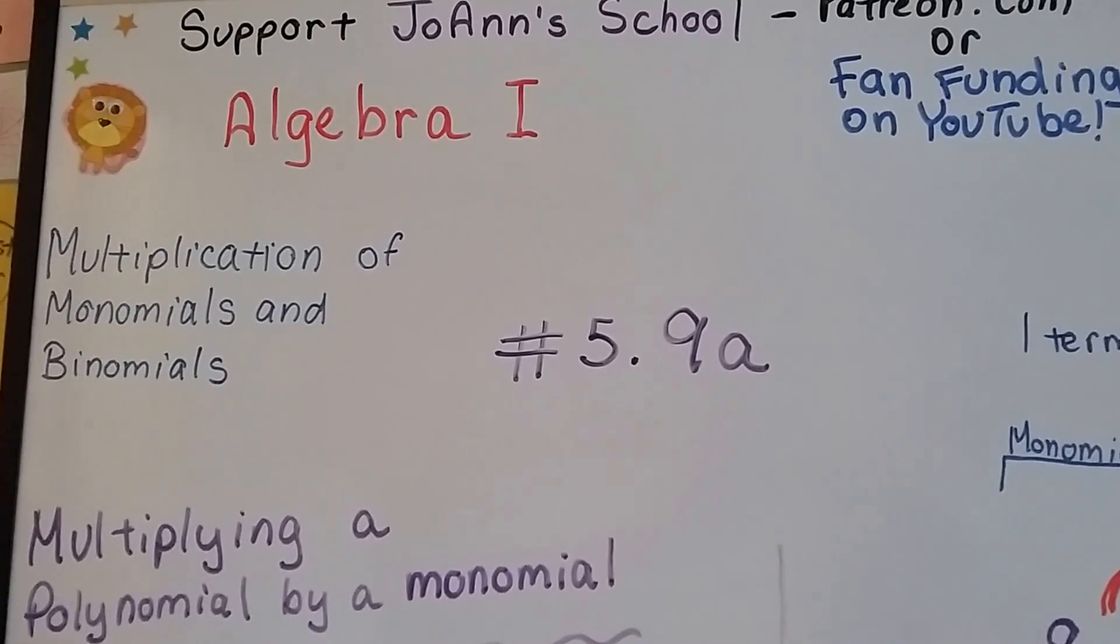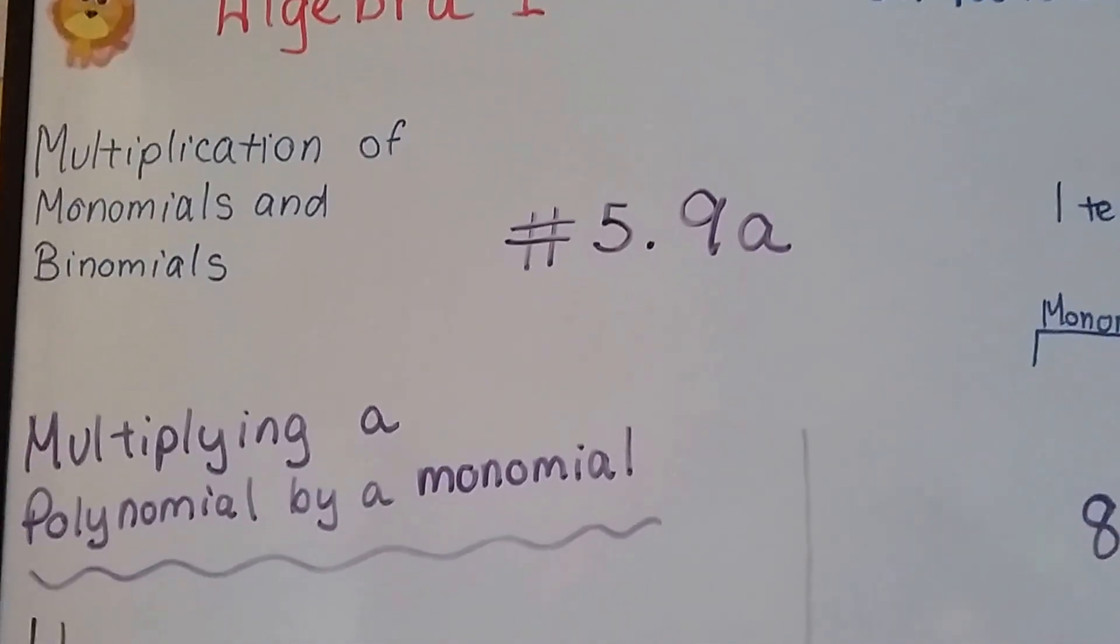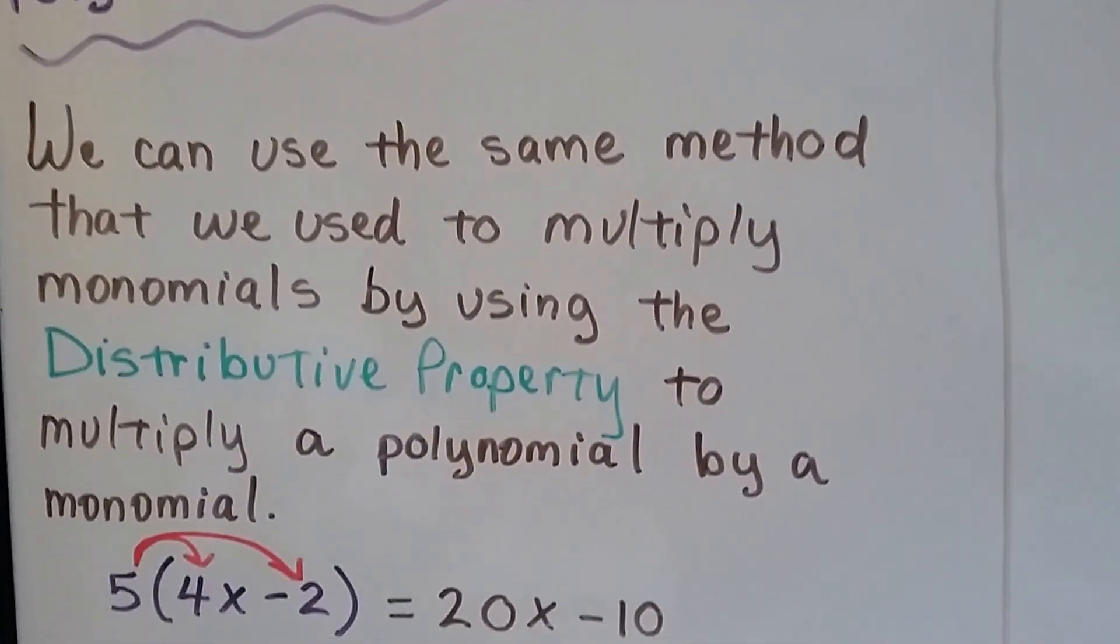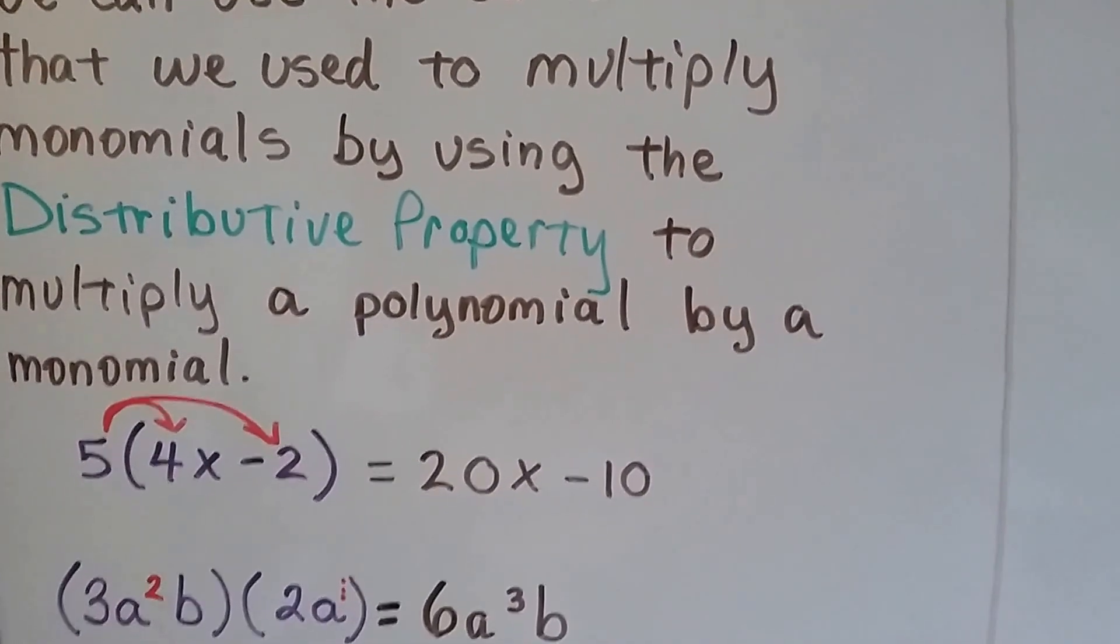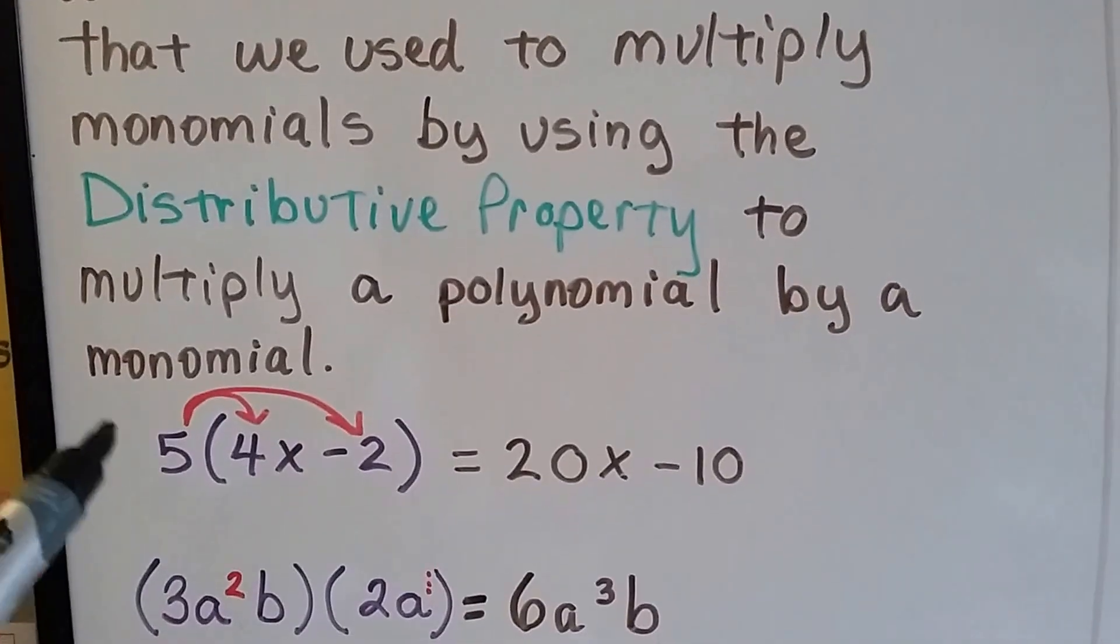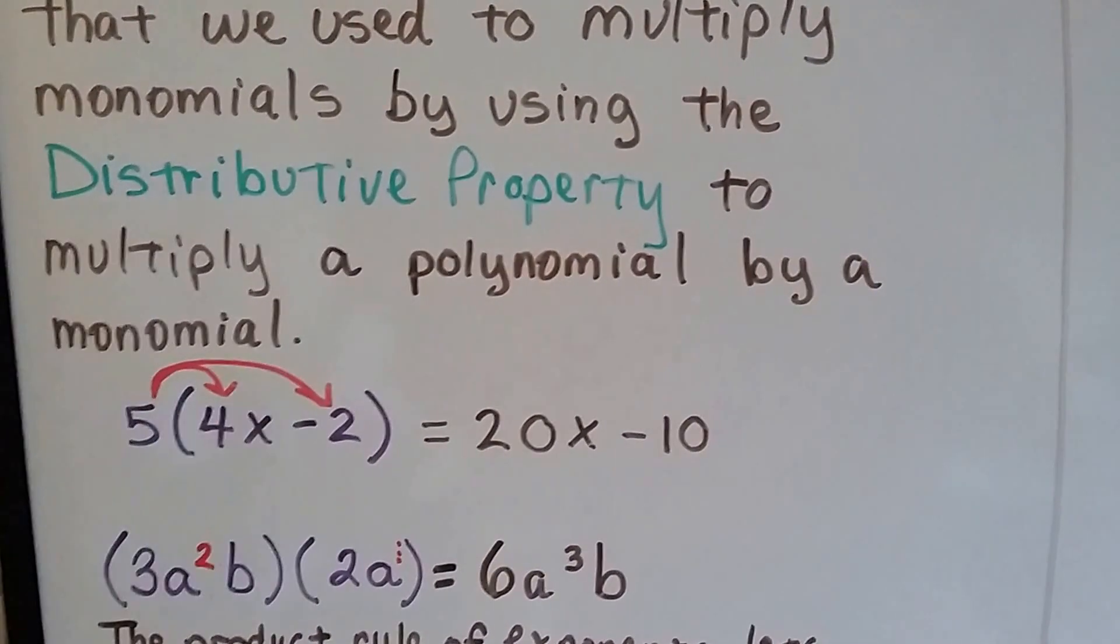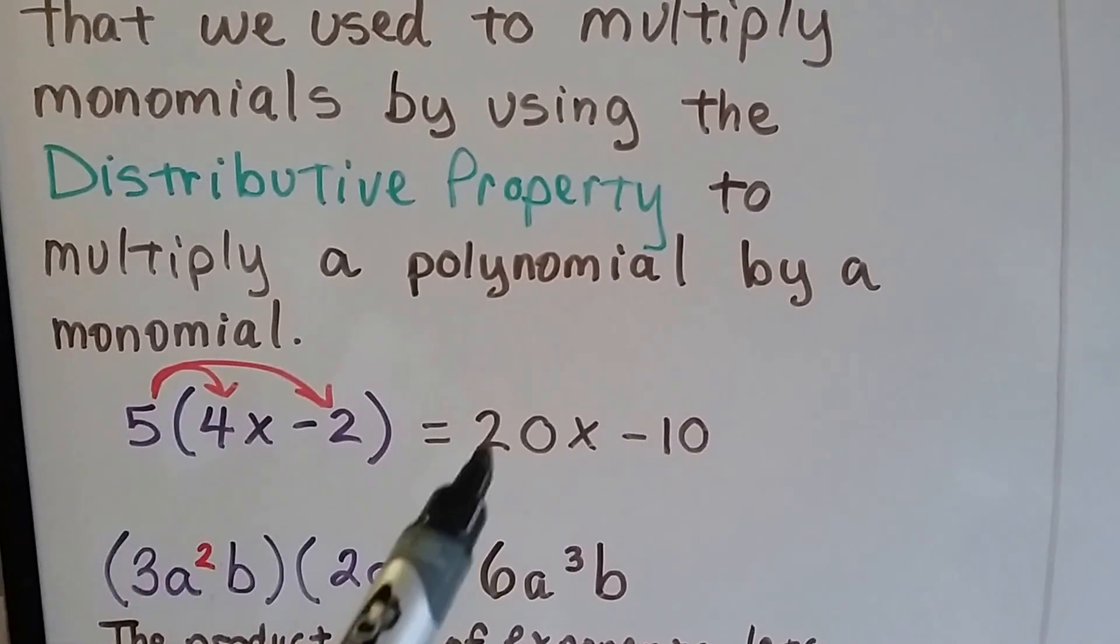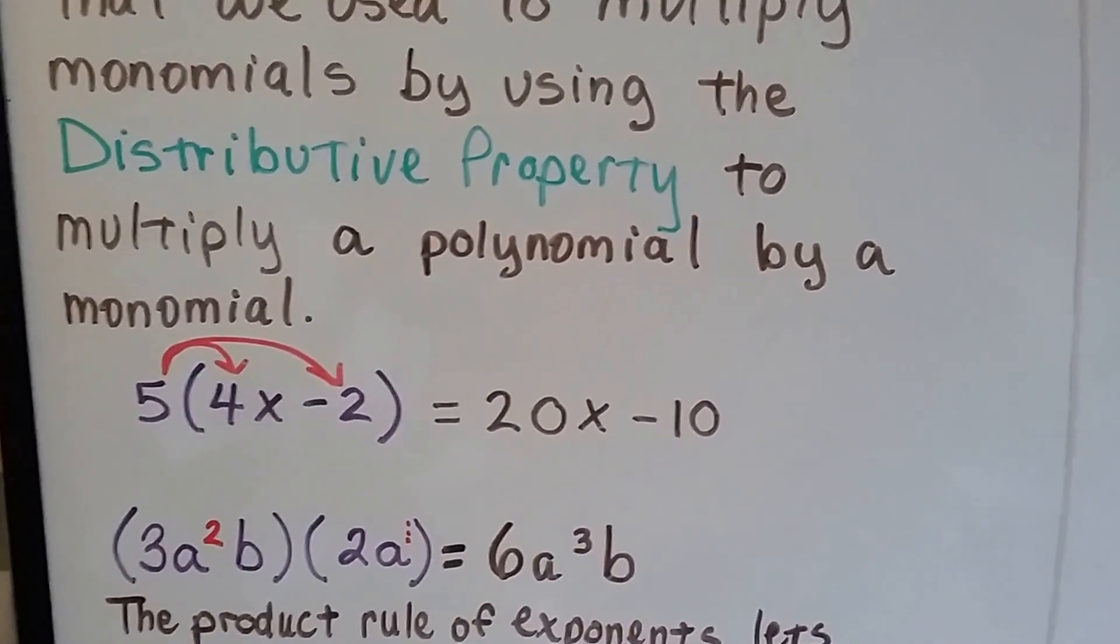Algebra 1 number 5.9a. We're going to talk about multiplication of monomials and binomials in this unit. We're multiplying a polynomial by a monomial. We can use the same method that we use to multiply monomials together by using the distributive property to multiply a polynomial by a monomial. When we did the monomials, we just distributed this 5 to this term and to this term. 5 times 4x is 20x. They're both positive, so that's positive. And 5 times negative 2 gives us negative 10, so we have 20x minus 10.